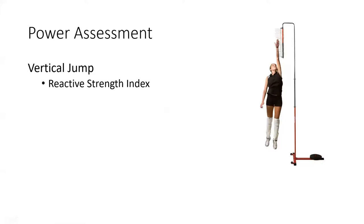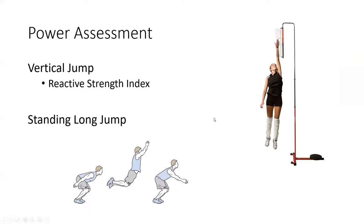For power assessment, we have tests like the vertical jump and standing long jump. From the vertical jump, we can take different numbers to understand if an athlete is more reactive, better at force production, or better at using the stretch shortening cycle. The standing long jump and standing lateral long jump give us sagittal and lateral power measures. These horizontal and lateral measurements are more conducive for change-of-direction and rotational sports, while the vertical jump is more specific to volleyball and basketball players.